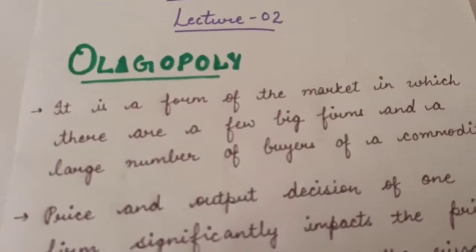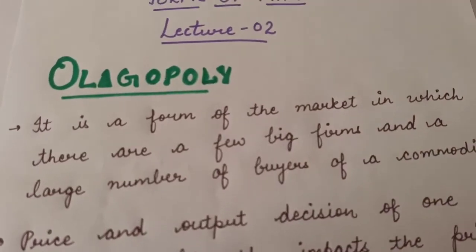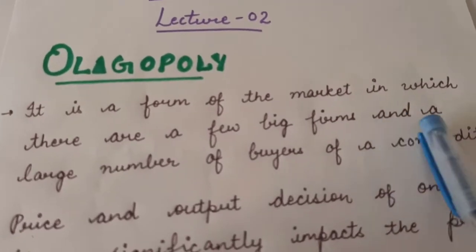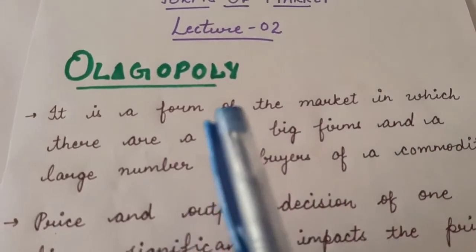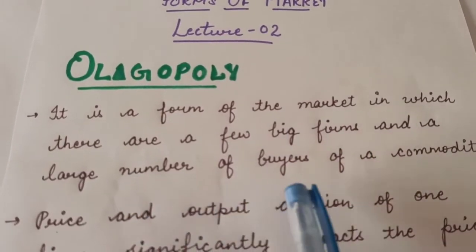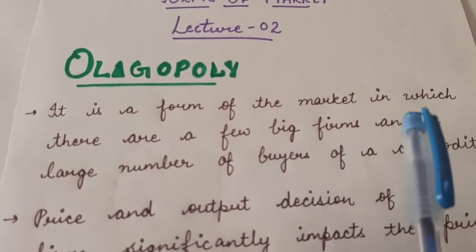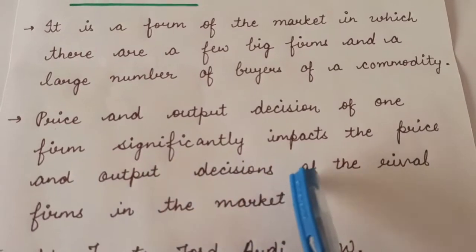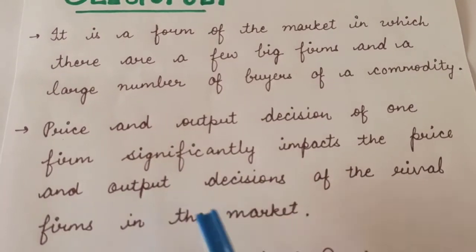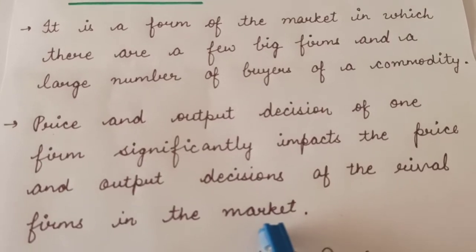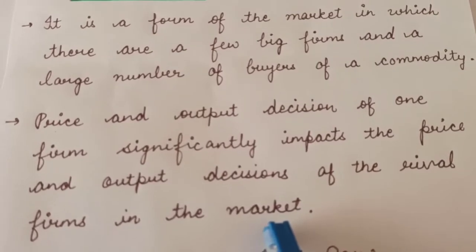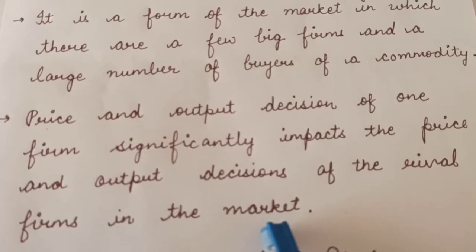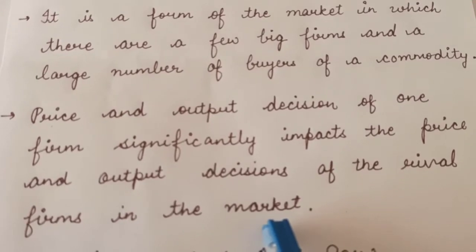So what do you know about Oligopoly Market? It is a form of market in which there are few big firms and a large number of buyers of a commodity. In this kind of market, there are few big firms and large number of buyers. There are branded firms. The price and output decision of one firm significantly impacts the price and output decision of the rival firm in the market. So we can say that in such a market, few firms are interdependent.